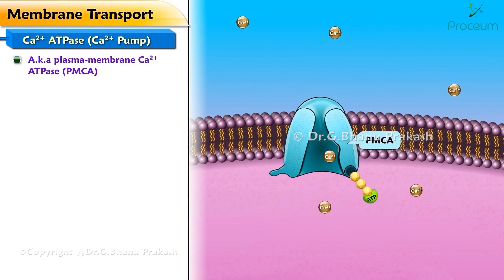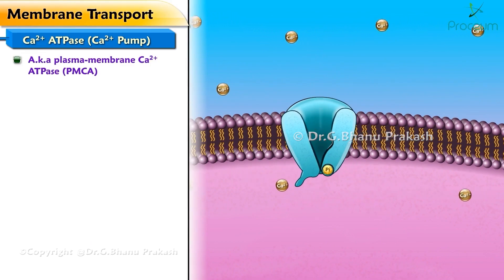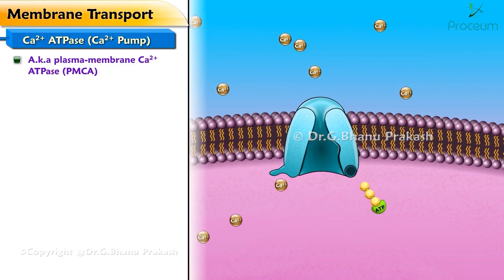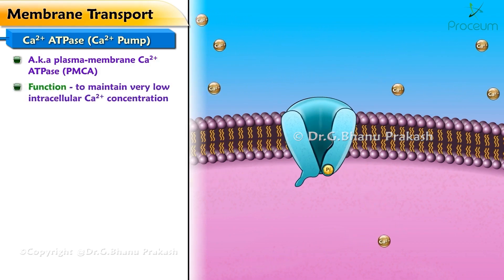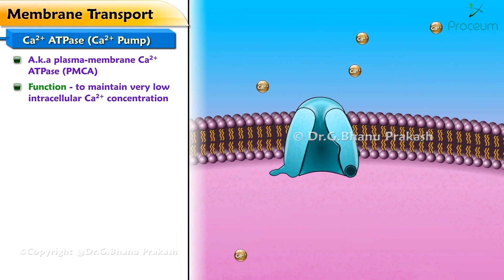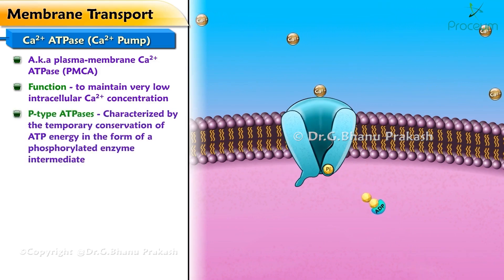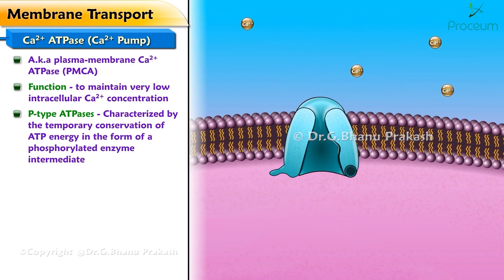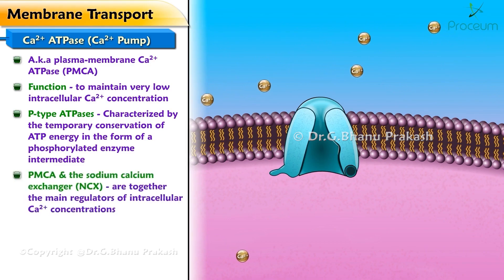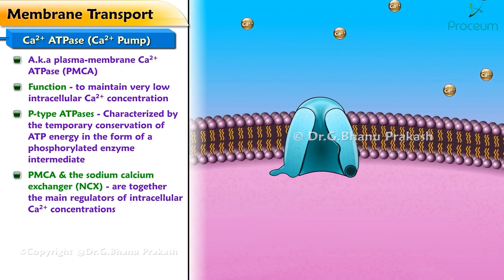Now let's move on to the calcium ATPase, or calcium pump. Calcium ATPase, or plasma membrane calcium ATPase (PMCA), functions to remove calcium ions from the cell against an electrochemical gradient. One Ca2+ ion is extruded for each ATP hydrolyzed. PMCA mainly functions to maintain very low intracellular calcium concentration. The PMCA pump belongs to the family of P-type ATPases, characterized by the temporary conservation of ATP energy in the form of a phosphorylated enzyme intermediate, hence the name P-type.